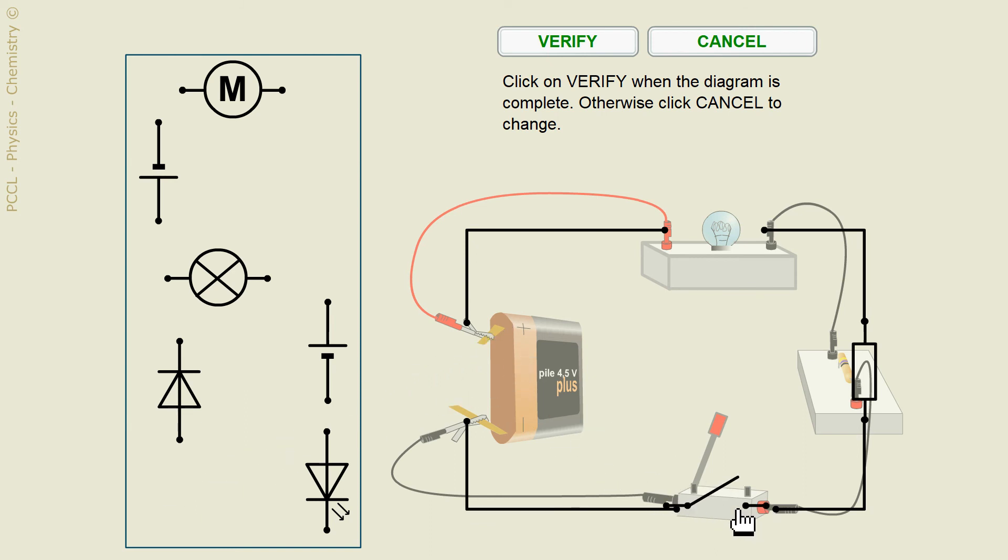The switch. The battery with the positive. So that would be this one. And finally the lamp. You can't go wrong. It's not very hard.